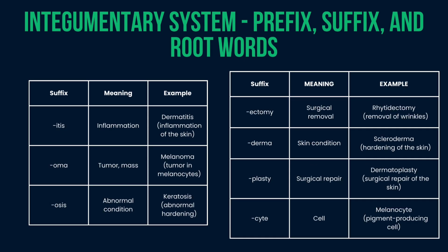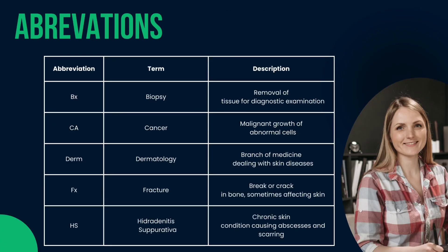Next we'll see suffixes. -Itis means inflammation — dermatitis: inflammation of the skin. -Oma means tumor or mass — melanoma: tumor of melanocytes. -Osis means abnormal condition — keratosis. -Ectomy means surgical removal. -Derma refers to a skin condition. -Plasty means surgical repair — dermatoplasty. -Cyte means cell — melanocyte: pigment-producing cell.